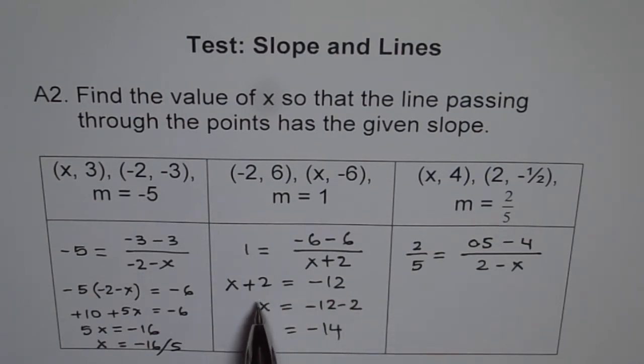What I did was, for example, here I subtracted 2 from both sides. Then it became x here, and minus 12 minus 2 equals minus 14. I'm not writing all those steps.